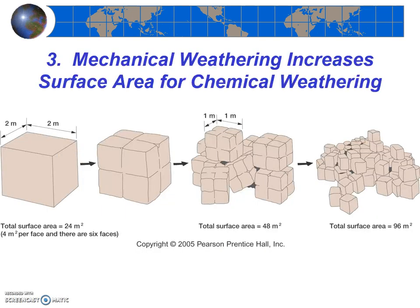A third factor that affects the rate of weathering is the interaction between mechanical weathering and chemical weathering. Increased mechanical weathering leads to an increase in chemical weathering. Why? Simply, breaking a rock into smaller pieces results in more surface area for water to interact with within the rock, and more contact with water leads to more chemical weathering. Increased chemical weathering can also lead to an increase in mechanical weathering, as many of the products of chemical weathering are softer and easier to break than the original minerals in the rock.